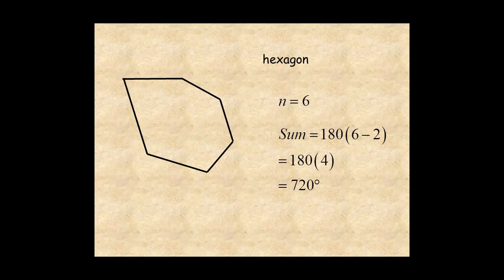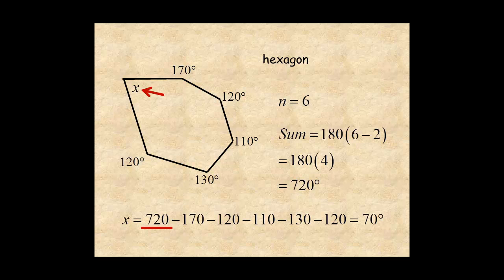If you know the sum of the interior angles of this hexagon and the measures of five of its interior angles, you can find the measure of the missing angle. To do this, start with 720 and subtract the measures of the other angles. The missing angle is 70 degrees.